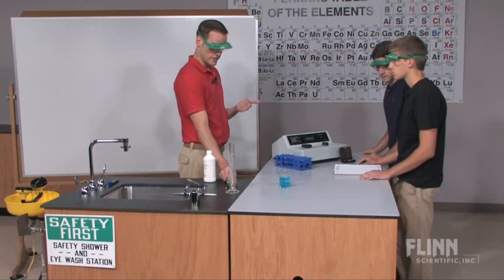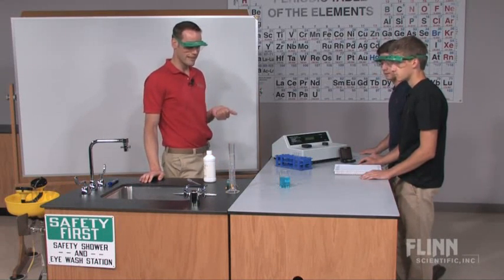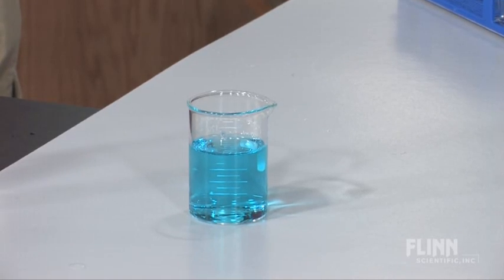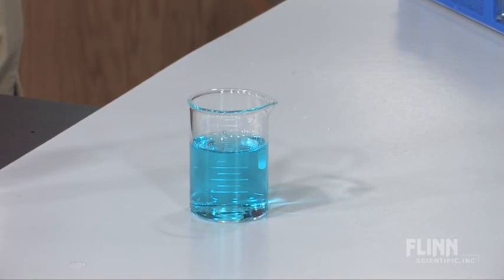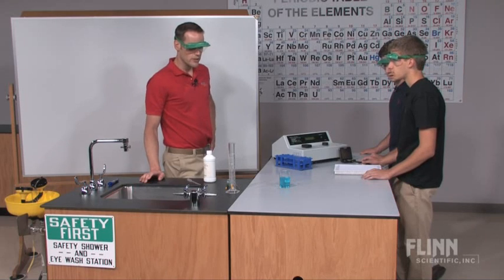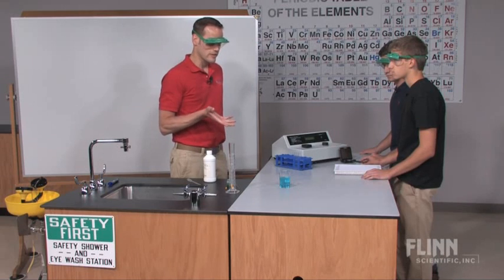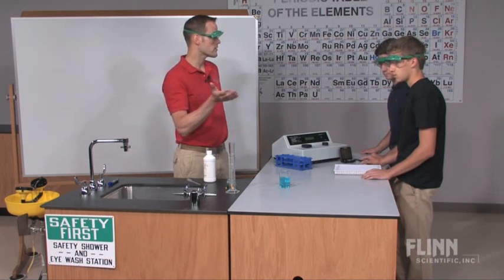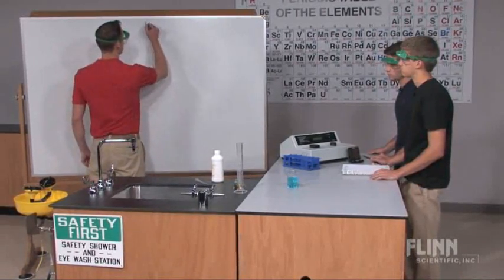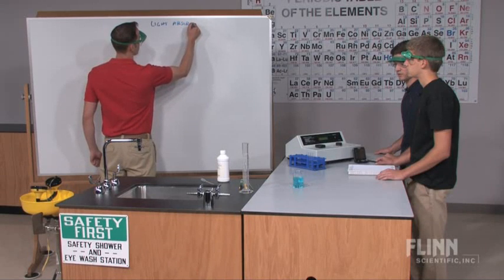Students notice the color changing — from green to blue. They also observe the color continuing to fade, getting clearer over time. If we've got something that's already colored and the color is changing, what data do you think we can collect on the system? Students suggest measuring how much light is being absorbed and how much light is being transmitted through it.